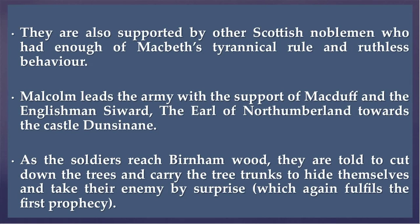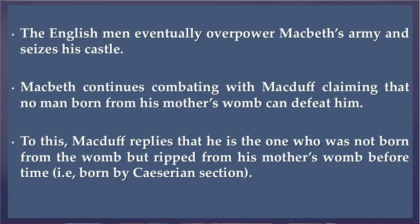Macbeth leads the army with the support of Macduff and the Englishman Seward, the Earl of Northumberland, towards the castle Dunsinane. As the soldiers reach Burnham Wood, they are told to cut down the trees and carry the tree trunks to hide themselves and take their enemy by surprise, which fulfils the first prophecy. The English eventually overpower Macbeth's army and seize his castle. Macbeth continues combating with Macduff, claiming that no man born from his mother's womb can defeat him. To this, Macduff replies that he is the one who was not born from the womb, but ripped from his mother's womb before time — that is, he was born by Caesarean section.